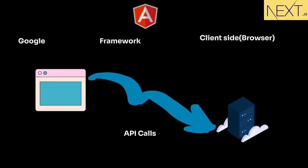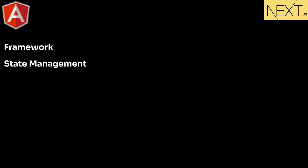Angular is a complete framework. It has UI development features as well as routing — navigating from one page to another — and a built-in HTTP module for making back-end API calls. At the same time, to manage state it has Angular services, which manage the application state. State management means holding data on the UI side temporarily, and submitting it all to the back end when needed. Since it is a client-side application, it needs to hold the data somewhere on the UI until it's sent to the back end.